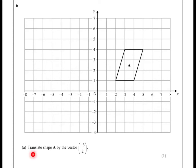Question 6, part A. Translate shape A by the vector minus 3, 2. The minus 3 tells us we move to the left, so we're going to go 1, 2, 3 to the left. And the 2 tells us to go up, so we'll go 1, 2 up.